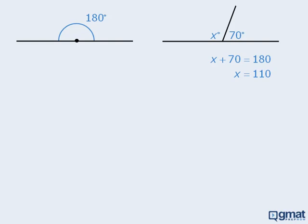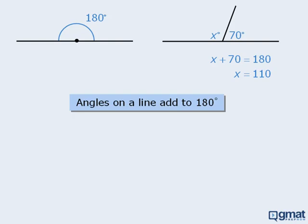To summarize this finding, we can say that the angles on a line must add to be 180 degrees. For example, if we have these three angles on the same line, we know that the sum of those three angles must be 180 degrees.